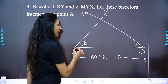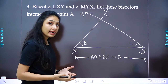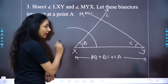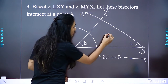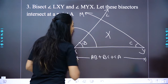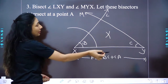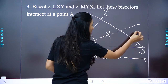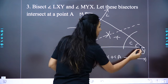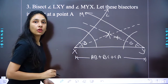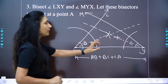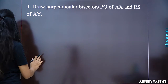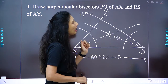Now bisect angle LXY: place arcs to cut the two arms of the angle, then from those two intersection points make cuts to find the bisector. Similarly, bisect angle MYX at Y. You have now divided angle B into two equal halves and angle C into two equal halves.